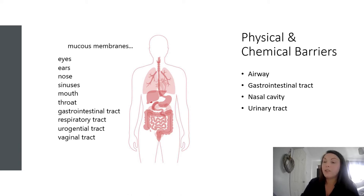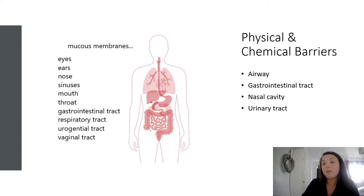Pathogens can also enter the body through the nose, which is why our nasal cavities are coated with sticky mucus that traps microorganisms before they can travel into the airway. Humans also have tiny projections called cilia on the lining of the airway which sweep particles up to the throat where they can be swallowed into the stomach. An area prone to infection in females is the urinary tract. Although the female urethra is short and can provide a passage for external bacteria, most bacteria will be flushed out when the bladder empties.